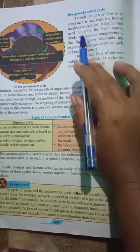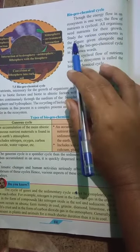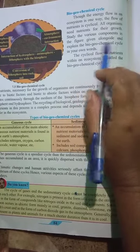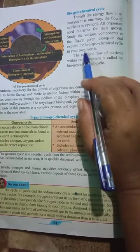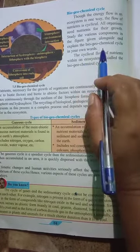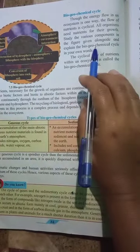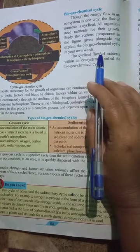All organisms need nutrients for their growth. Study the various components in the figure given alongside and explain the biogeochemical cycle in your own words. Here you have the biogeochemical cycle with different components given in this figure that you have to explain.